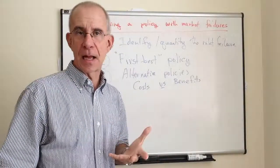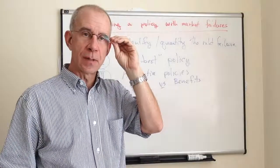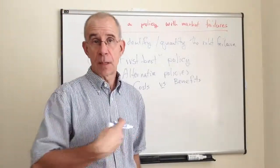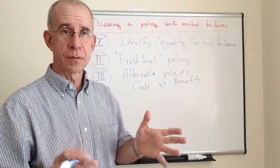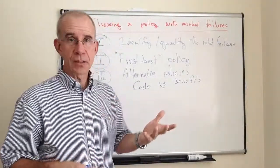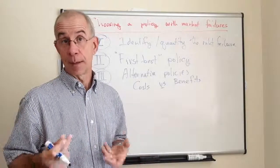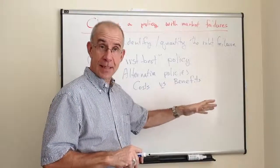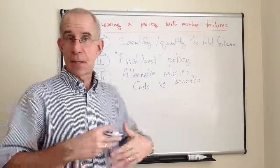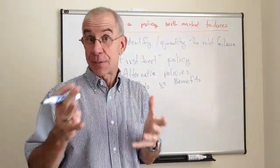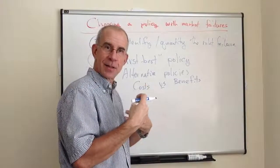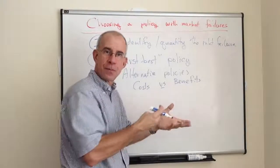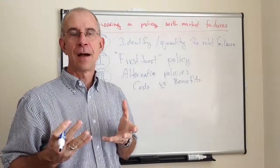Let me give you an extreme example. A lot of people are concerned about greenhouse gases and the impact on climate, and one of the main sources of that are automobiles. Automobiles create carbon dioxide and spew it out, and the social consequences of that aren't necessarily taken into account by the person driving the car. An extreme way to deal with that problem is to ban all cars. Now that seems a little extreme — and implicitly when somebody says that's too extreme, they're saying the costs outweigh the benefits.